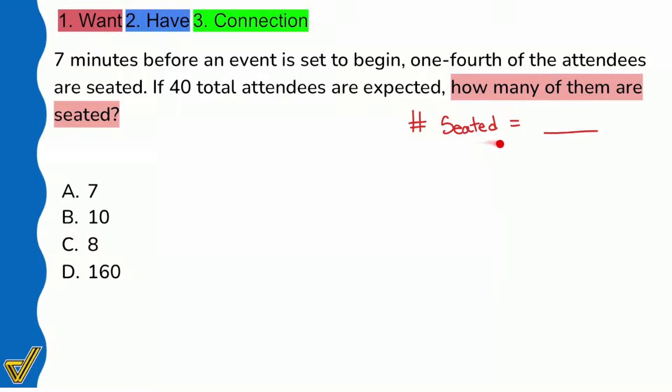We know that one-fourth, or a quarter, or one over four - let's write that down right there - one-fourth of the attendees. So one-fourth multiplied by all attendees, that's how many are seated.